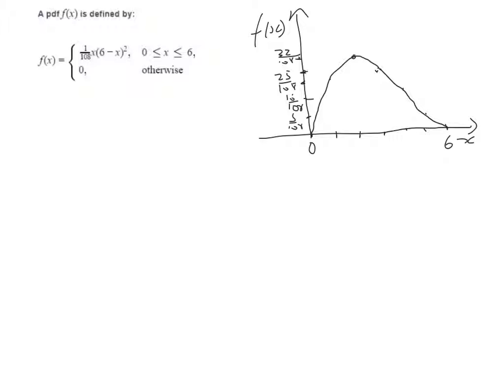It's a cubic. It's not symmetrical. I can see from the graph that the highest point is around 2. So when I differentiate to find the turning point, I'll know it should be around the 2 mark. Otherwise, something's gone wrong in my differentiation.